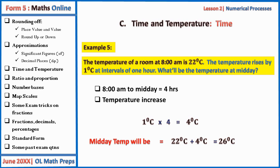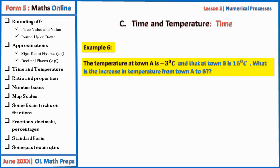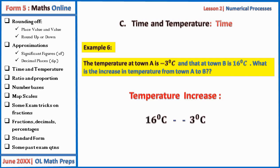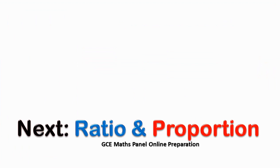Since the temperature is rising, the new temperature will be 22°C + 4°C = 26°C. Example six: if the temperature at town A is −3°C and at town B is 16°C, what is the increase in temperature from town A to town B? This is just like the number line — the increase in temperature means the difference: 16 − (−3) = 19°C. Note that minus minus equals plus, like minus times minus.